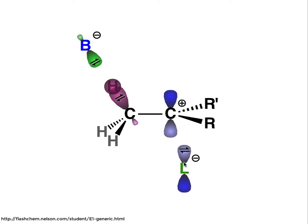The leaving group takes the electrons with it, leaving an empty P orbital on that SP2 hybridized carbon, which again is trigonal planar.